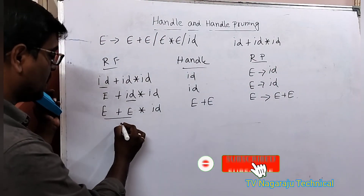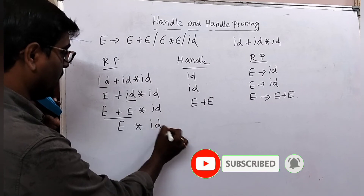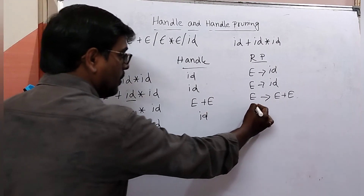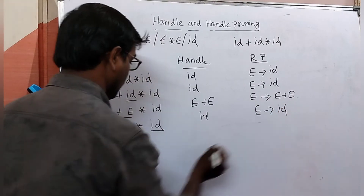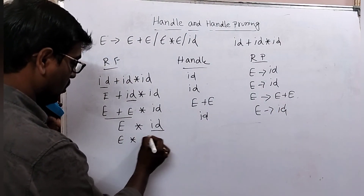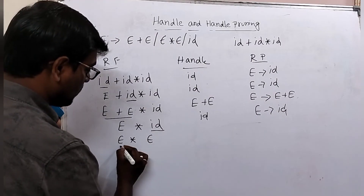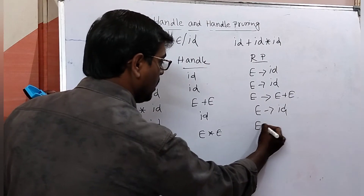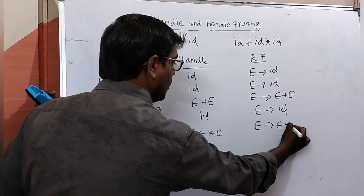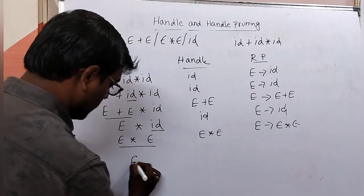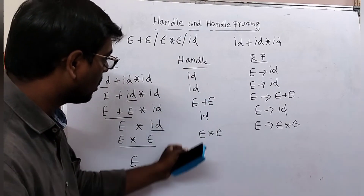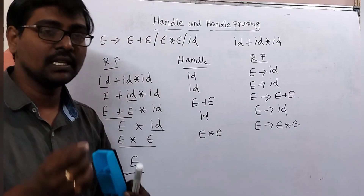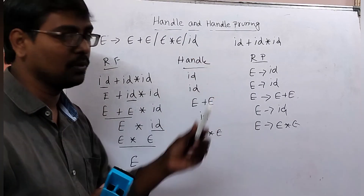E tends to E plus E gives us E into E. Now this substring E into E is the handle — ID is replaced with E, giving E into E. E tends to E into E: this entire thing is replaced with E. We reach the start symbol. These are called handles, and this is the reducing production. Deriving a sentence in the rightmost derivation in reverse order is handle pruning.